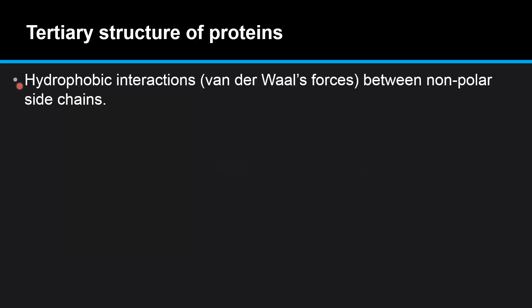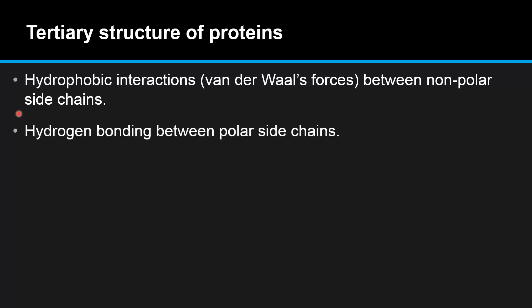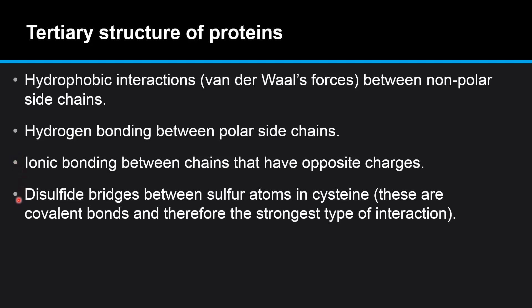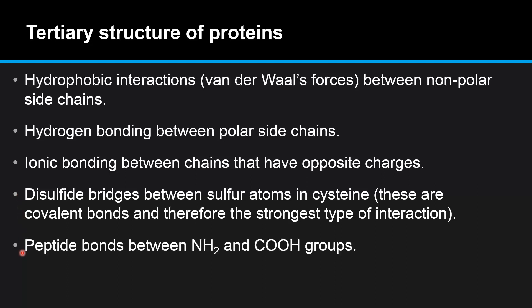Here is a detailed list of the interactions that form the tertiary structure. We have hydrophobic interactions or van der Waals forces between non-polar side chains. We have hydrogen bonding between polar side chains. Ionic bonding between chains that have opposite charges. Disulfide bridges between sulfur atoms in cysteine — these are covalent bonds and therefore the strongest type of interaction. And finally we have peptide bonds between NH2 and COOH groups.